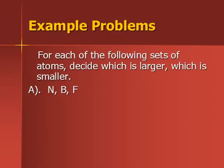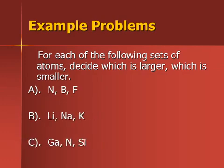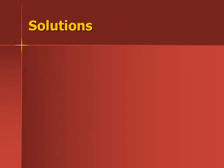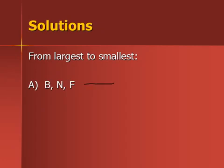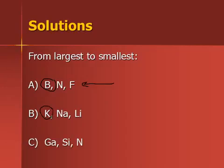Here are a couple of example problems. I've got three sets of elements — you can pause the video and decide which is going to be the largest and which is going to be the smallest. For the solutions: for set A, all atoms are in the same period, so we look for the one furthest to the left, which is boron. For set B, they're all in the same group, so we look for the one furthest down the group, which is potassium. For set C, none are in the same group or period, so we look for the one closest to the bottom-left corner near francium or cesium on the diagonal, which is gallium.